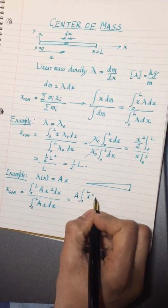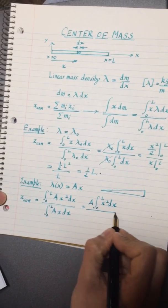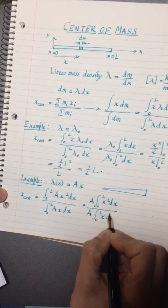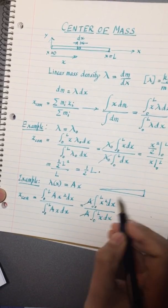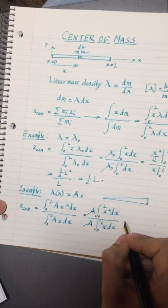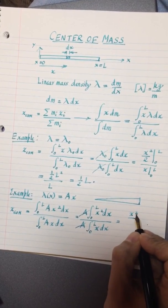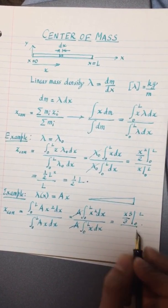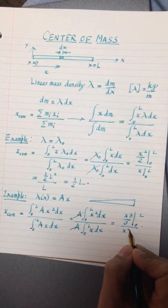The A here is a constant so I can bring it out of the integral sign, and it is A times integral 0 to L x squared dx divided by A times the integral 0 to L x dx. Okay the A's cancel out just like the lambda naughts cancelled out over there, so this gives me x squared over, x cubed excuse me, over 3 from 0 to L.